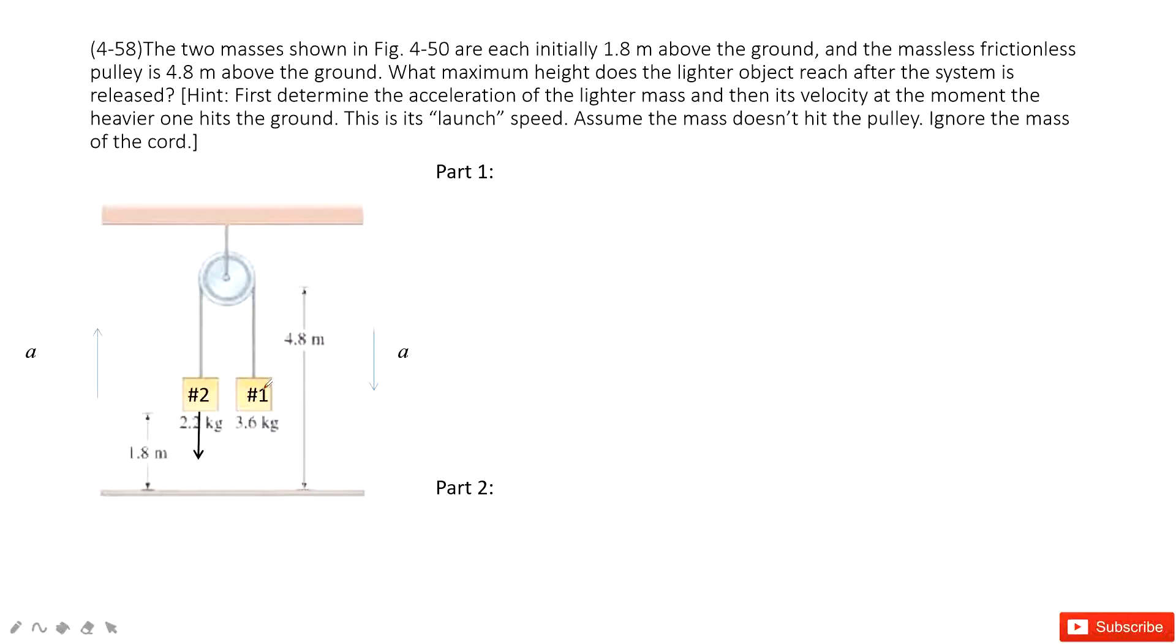And then we have two objects, number 1 and number 2. So first thing we want to find is the acceleration. So we need to determine the acceleration for the lighter mass, and then its velocity at the moment the heavier one hits the ground. And then we find the maximum height this lighter object reaches after this system is released. So let's do the analysis, see what happens.